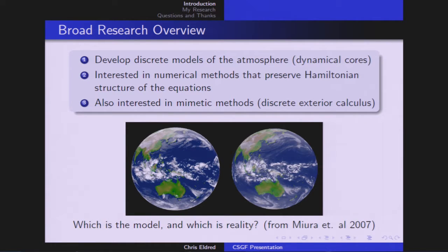The main thing that I work on are discrete models of the atmosphere, and in our field these are known as dynamical cores, and they're basically what you would get if you took all of the water out of the atmosphere and just let dry air move around. In that particular subfield, what I'm interested in are numerical methods that preserve this special Hamiltonian structure. And connected with that, I'm also interested in mimetic methods, discrete exterior calculus. I'm going to try to keep this talk at a high level and focus on the general concepts.